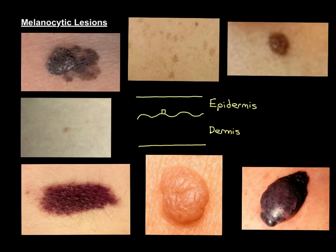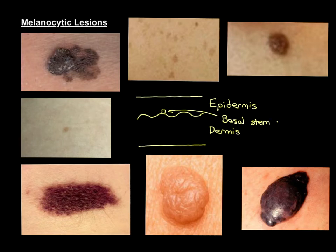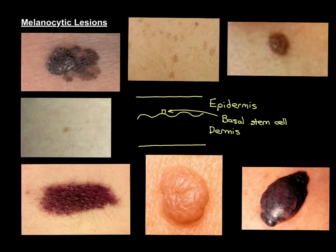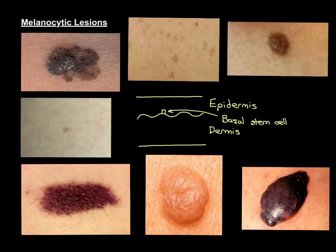The basal stem cells line most of the bottom layer of the epidermis and divide continuously. When a basal stem cell divides, one daughter cell remains a stem cell, maintaining the population of basal stem cells. The second daughter cell moves upwards off the basal layer and into the higher layers of the epidermis, where it gradually changes in nature and becomes flatter and flatter.